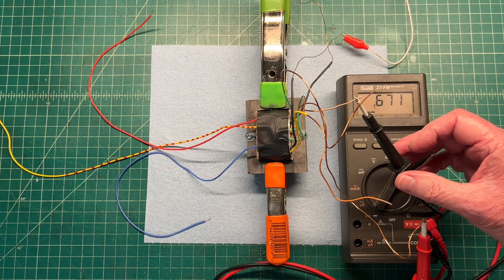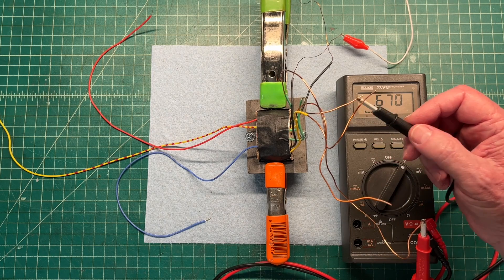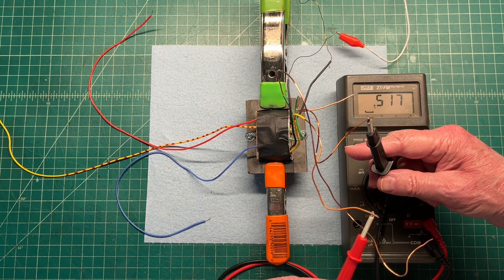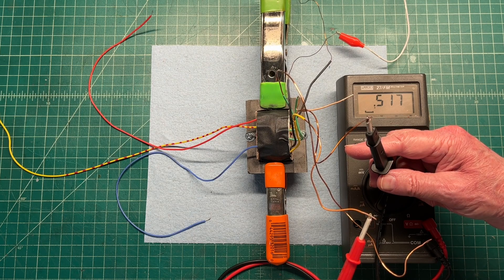Now let's check the 5 volt winding. And if it's showing up, let me get this out of the way, 0.517.